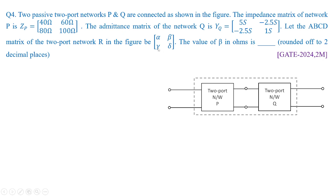The combined two port network is listed as R and it is nothing but elements which are present in R are alpha, beta, gamma and delta. We need to find the value of beta in ohms and we have to round it up to two decimal places.